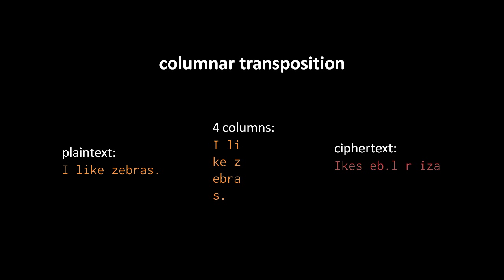Whatever number of columns we decide to use, that's the key for our message. You and I want to exchange messages and we've agreed to use columnar transposition. The secret key we then share is how many columns.